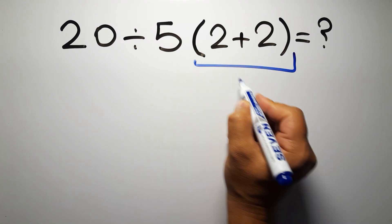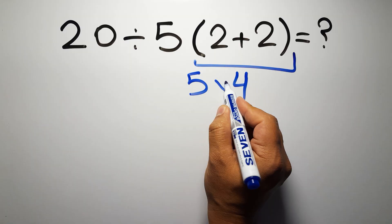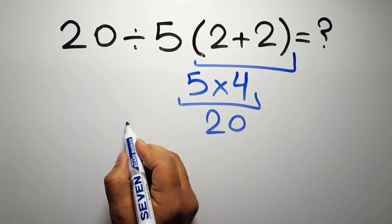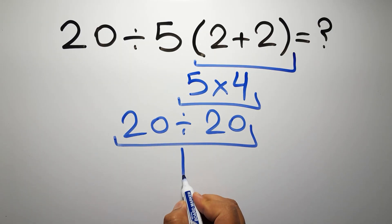2 plus 2 gives us 4, and 5 times 4 equals 20, so 20 divided by 20, which gives us 1.